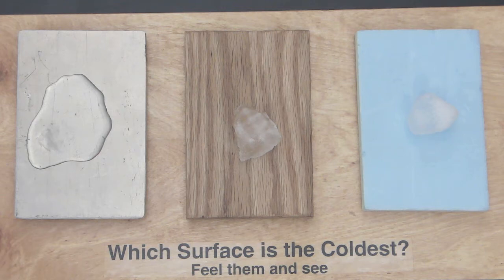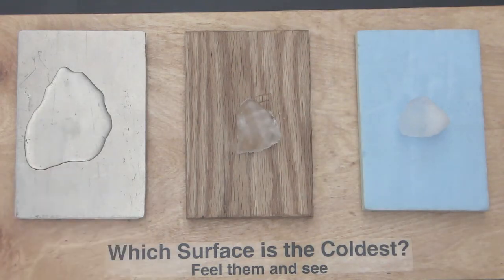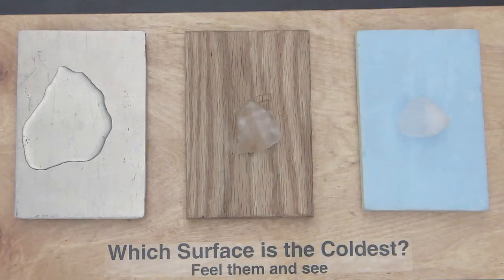Now at the end of one minute, we find that the ice cube on the foam is not melted at all. A few drops of water on the wood, but the ice cube on the metal is completely melted.